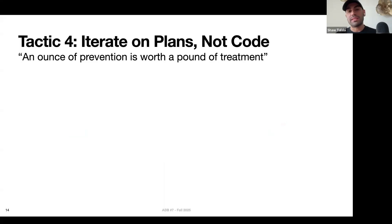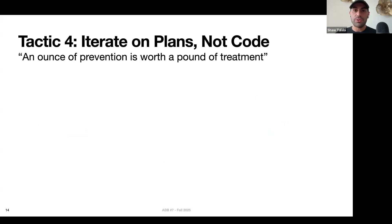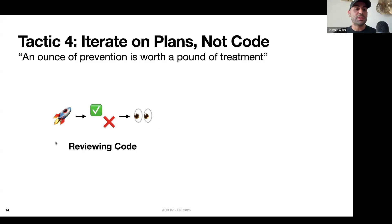The fourth tactic is iterating on plans, not code. When implementing a specific feature that's not trivial and will take multiple steps, it's much more efficient to have the LLM generate a plan, read it, and iterate on that — rather than generating a bunch of code, reviewing it, and iterating on that. Reviewing code is slower: the code gets generated, you run the application, check if it's working, look for errors, see if it does what you want, then try to figure out why something isn't working and prompt the LLM. This is a very time-consuming process that can take minutes or more.